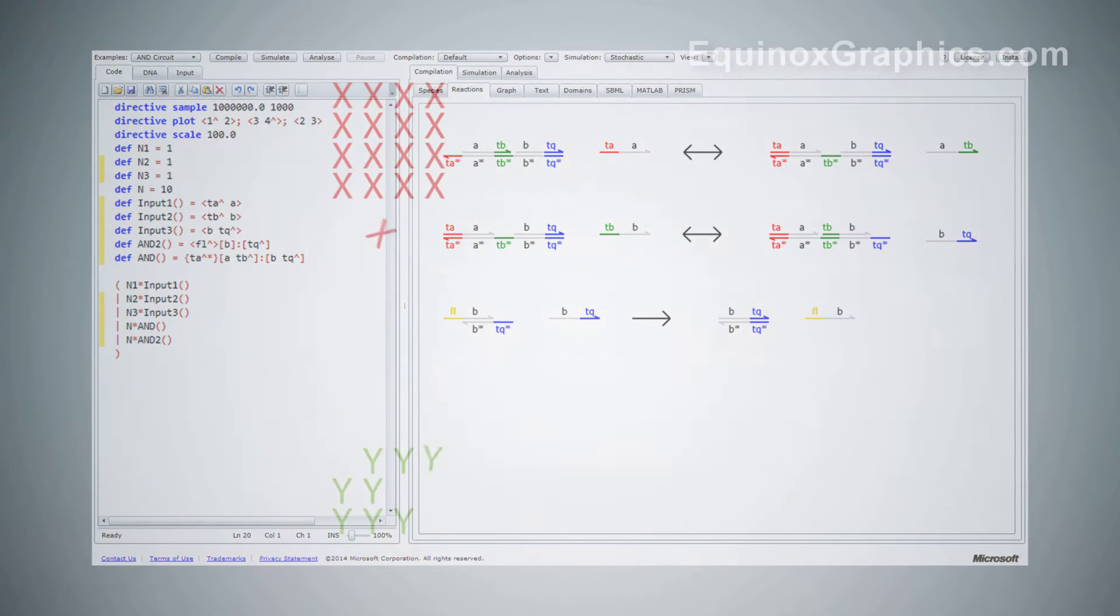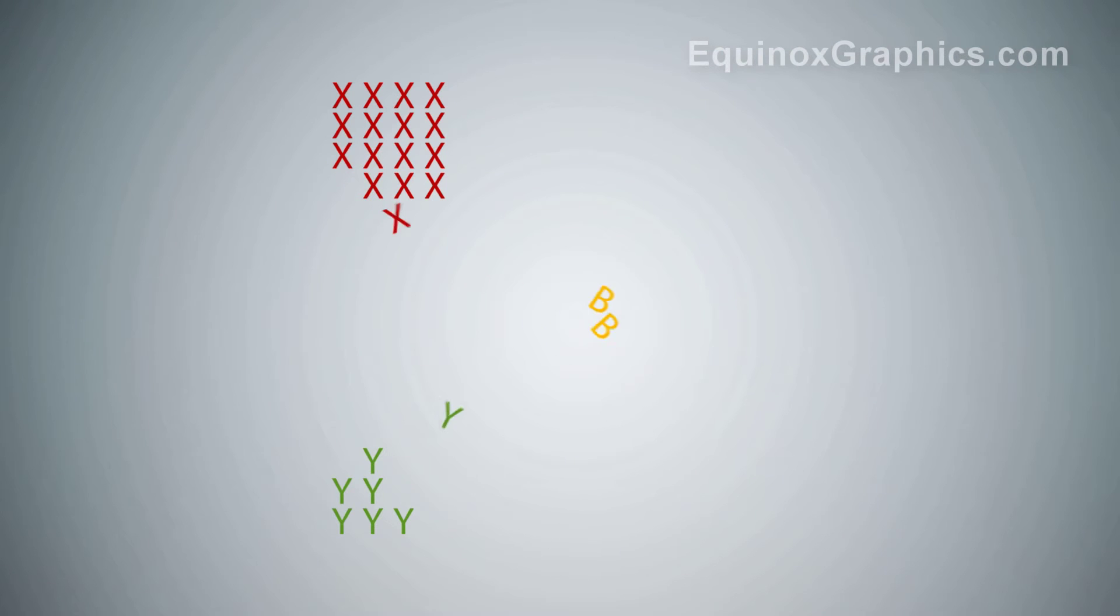As a proof of principle, we have developed a molecular circuit that implements an algorithm for achieving consensus. Given two populations of molecules, X and Y, the algorithm works out which is in the majority. The algorithm is expressed as three reactions.